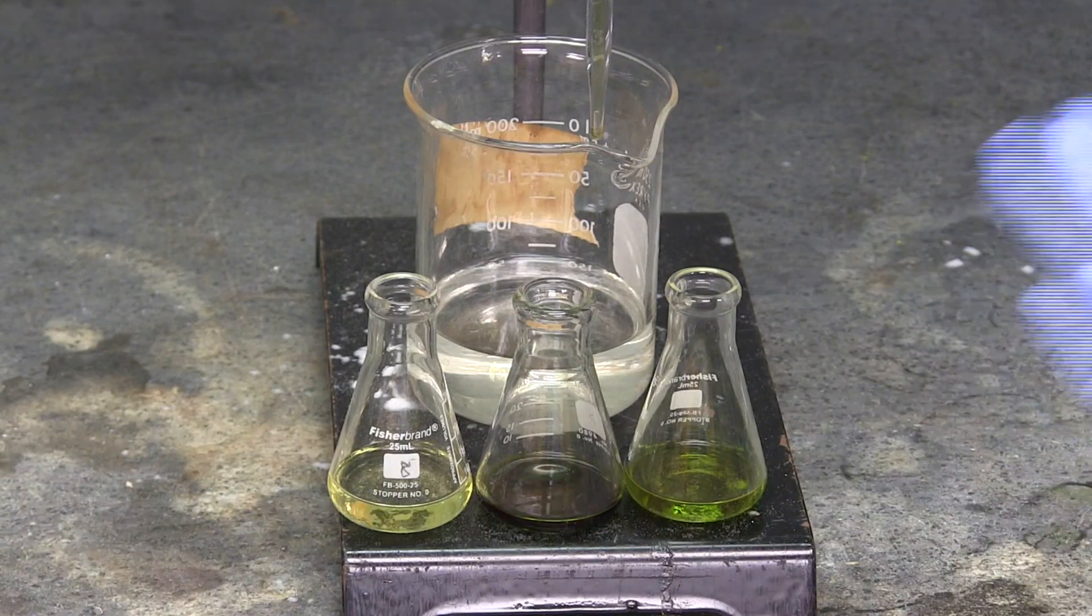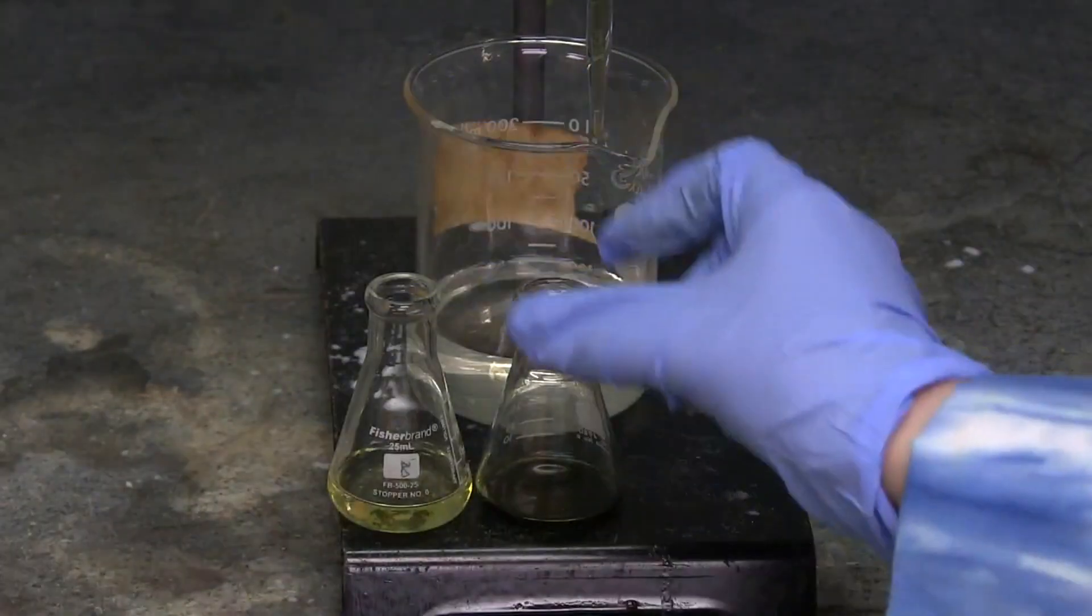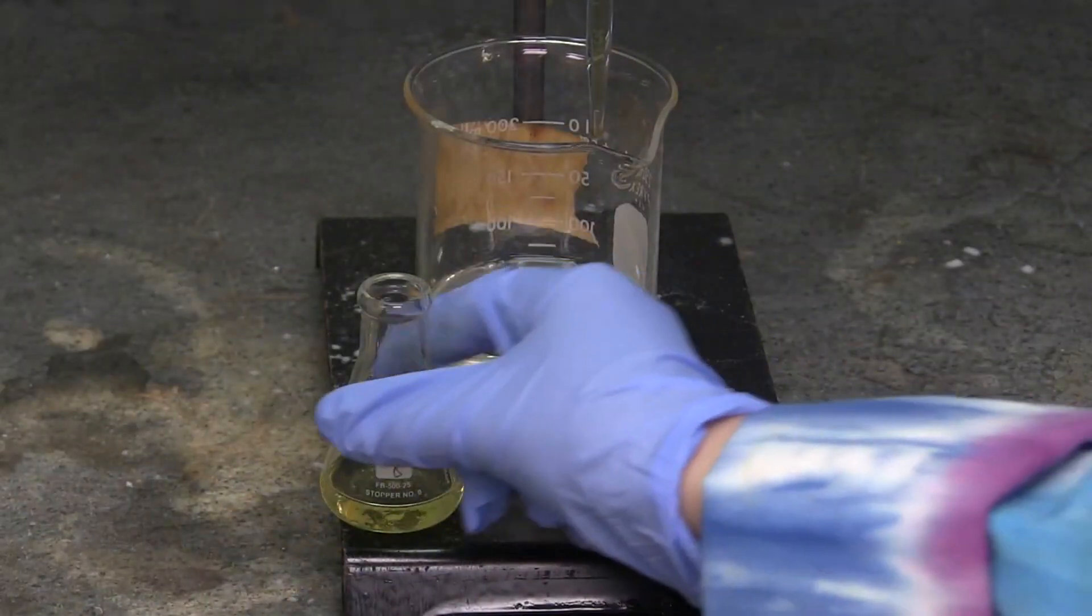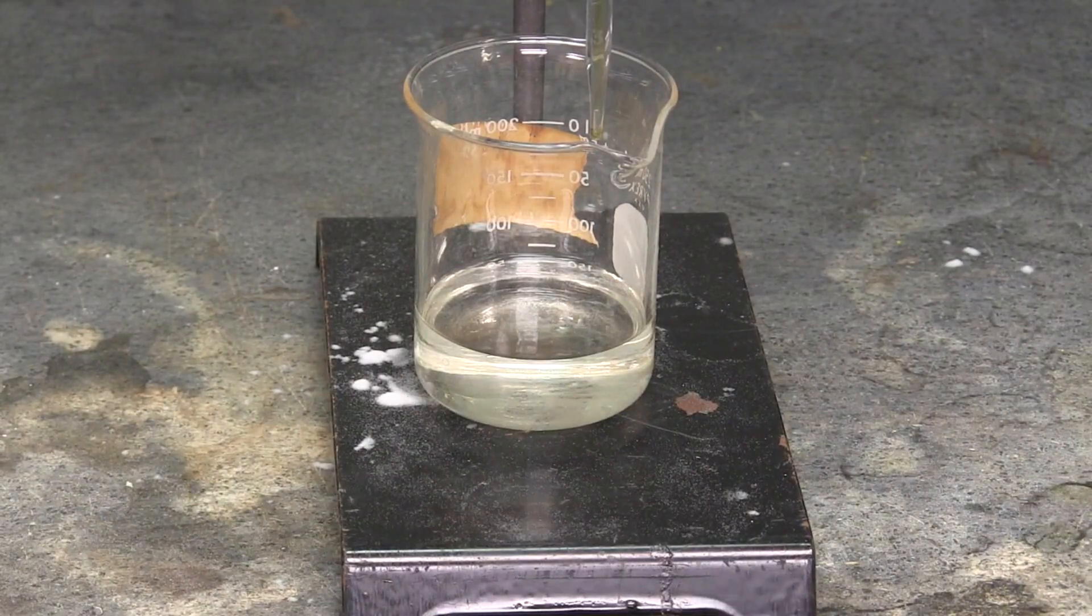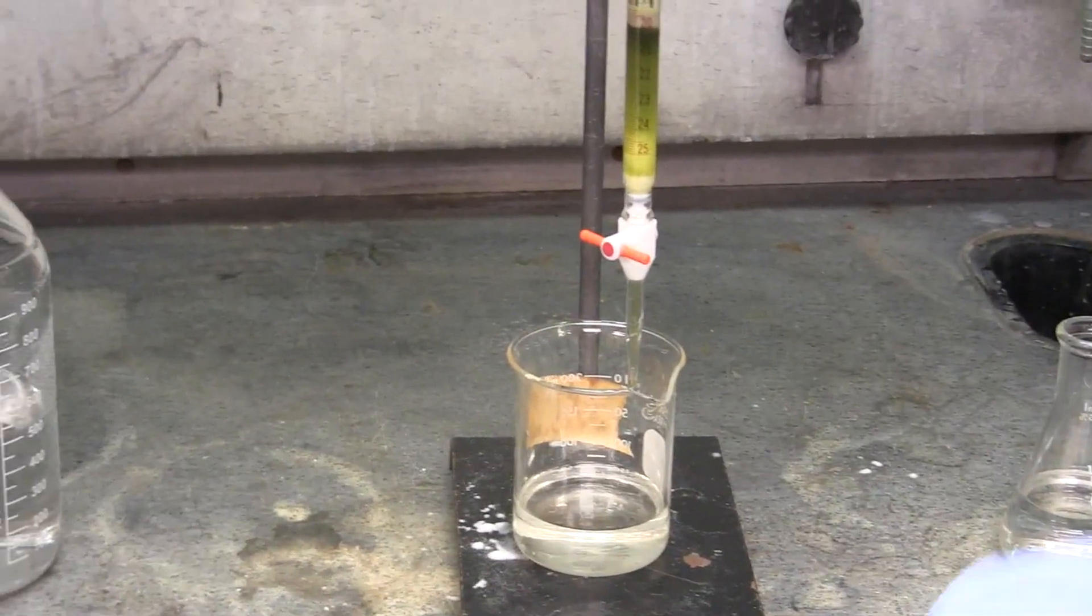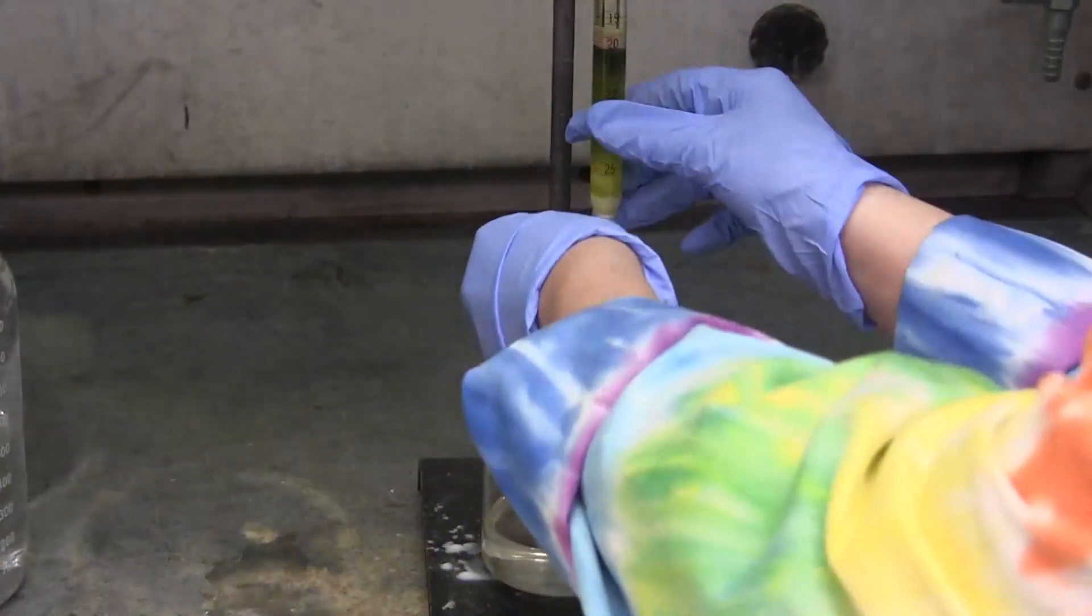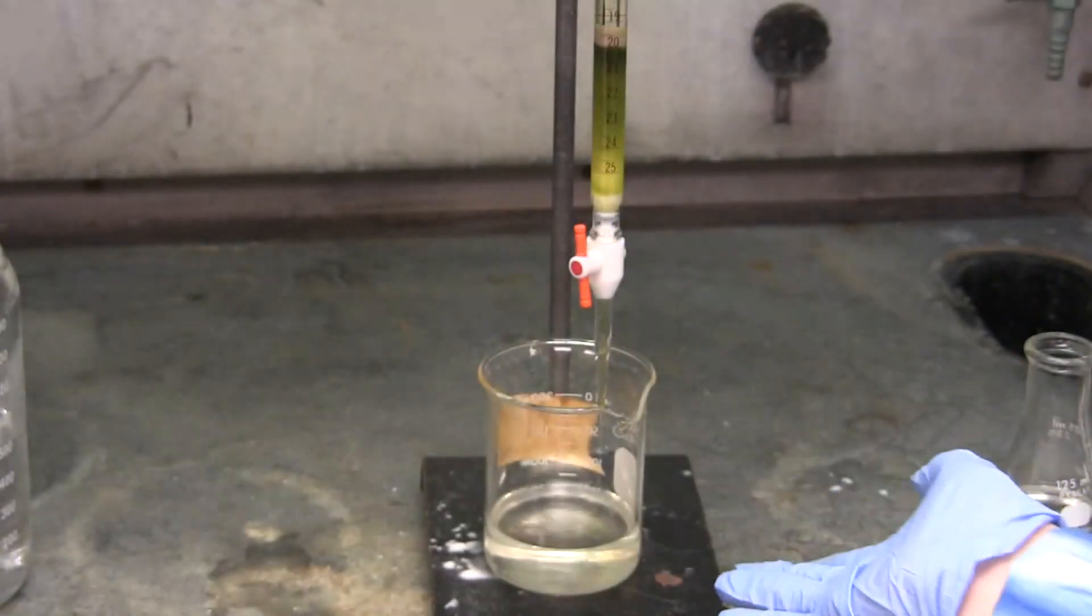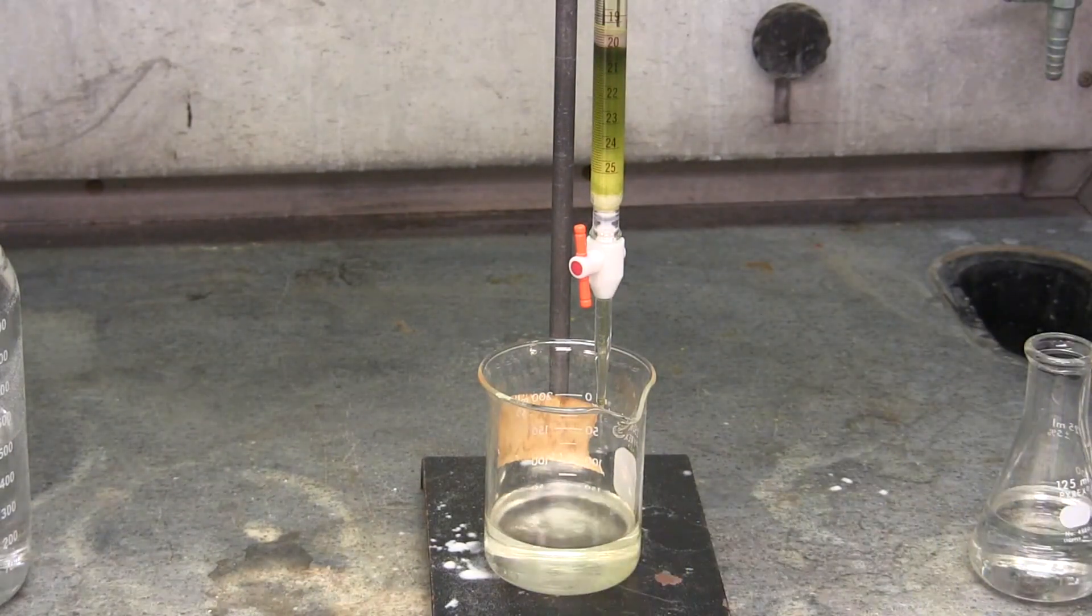The fractions will then be analyzed using TLC analysis. The column is then left open to drip into the waste beaker. The waste is then dumped into the proper waste beakers and the TA will take care of cleaning the column and putting away the column setup.